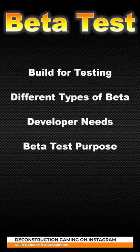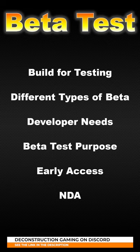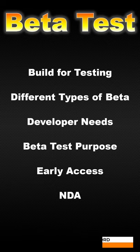Beta testing is used to discover game bugs, as usability testing, for stress testing, and more. You may also see beta testing referred to as early access. Some beta testing will require testers to sign an NDA and not be allowed to publicly disclose their experience.